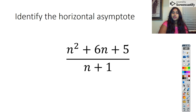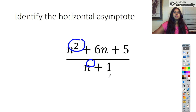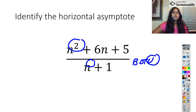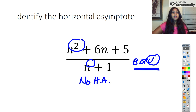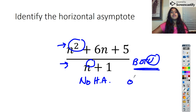Here we have another horizontal asymptote. I identify my biggest exponent on top and my biggest exponent on bottom. The top is bigger, meaning it's undefined — there is no horizontal asymptote. However, I told you if you have bigger on top, you should check: the numerator's exponent is exactly one more than the denominator's exponent, which means you have an oblique asymptote.